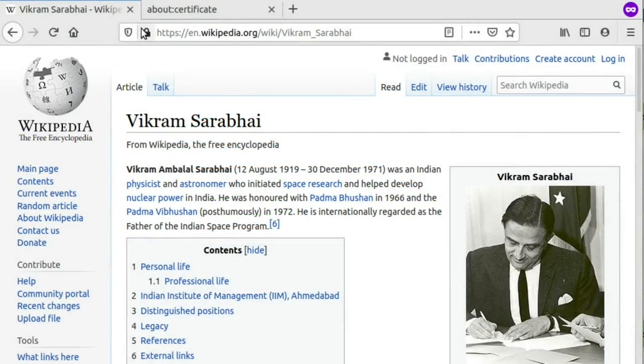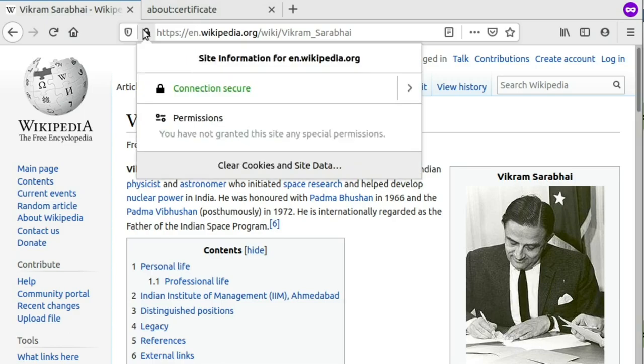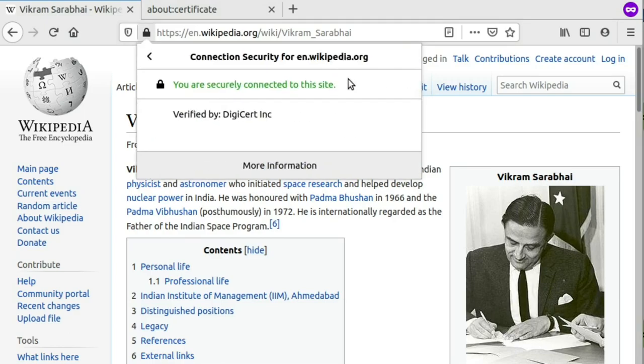Now let's see this in action. We look at the little lock on Wikipedia's site indicating that it's a secure HTTPS connection. This connection is verified by a company called DigiCert.